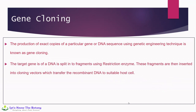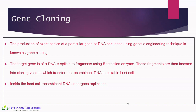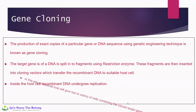The target gene of a DNA is split into fragments using restriction enzymes. These fragments are then inserted into cloning vectors, which transfer the recombinant DNA to suitable host cells. Vectors are nothing but viruses, liposomes, and naked DNA — vehicles used to introduce transgenes into the host genome. Inside the host cell, recombinant DNA undergoes replication, and a bacterial host will give rise to a colony of cells containing the cloned target gene.